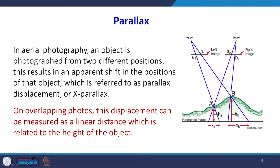In aerial photogrammetry, a very important figure is given here. There are two points on the ground, point A and point B, with different heights, and these points have been photographed from two different positions. On the photographic plane, the images of these two points are A1 and B1 on the left photo and A2 and B2 on the right one. The displacement in the direction of flight — like A1, B1 or A2, B2 — is called the x parallax, the parallax in the x direction, the direction of flight.